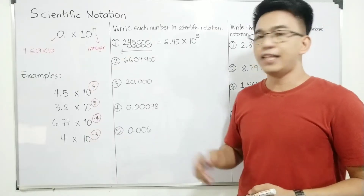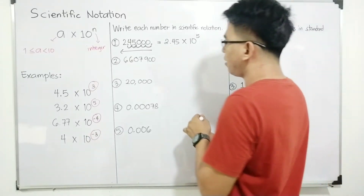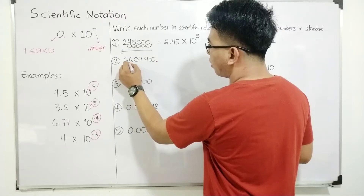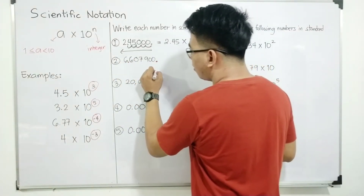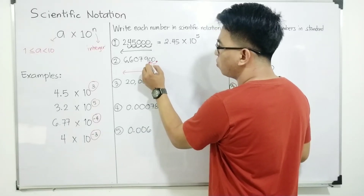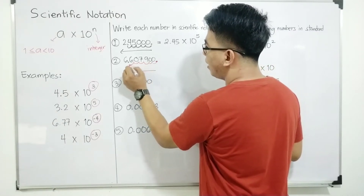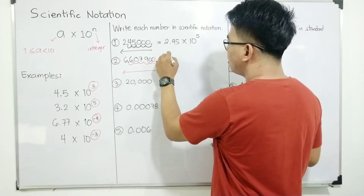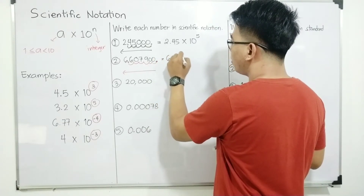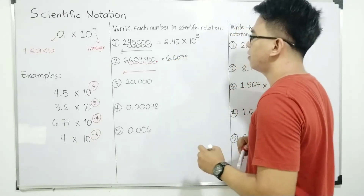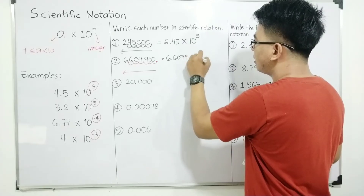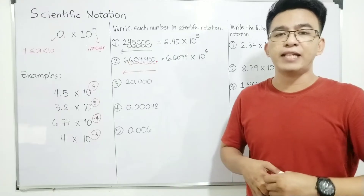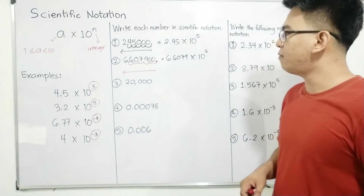Now let's move on with item number 2. This is our starting point and this is our end point. Our movement is from right to left, and we count 1, 2, 3, 4, 5, and 6. So our answer is 6.6079 times 10 raised to the 6th power, because we moved 6 decimal places.